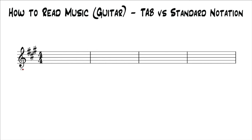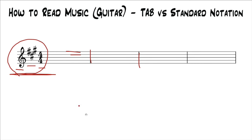In standard notation, you have the staff with the treble clef, key signature, time signature, bars, lines, and spaces — we've gone over all of this. In tab, you're not going to have any of this information usually, unless someone really decides to add it in. You're still going to find bar lines and bars separated out in most cases, which follow along with the standard notation, but the lines represent something totally different.